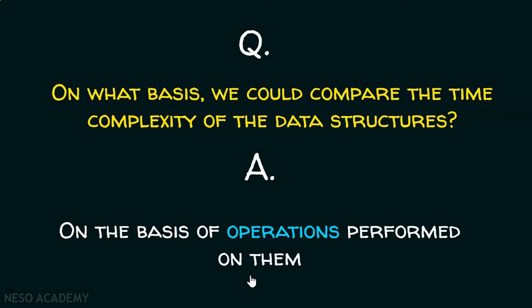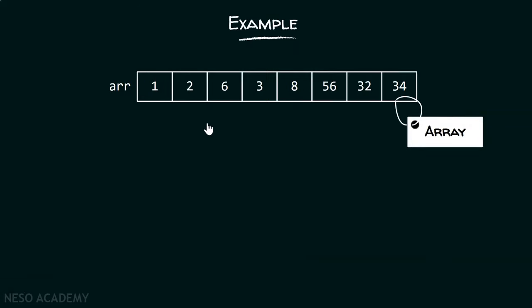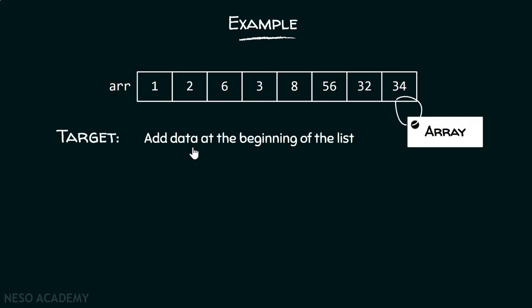Let me give you an example so the whole concept will be clear. Let's take an example of an array. Let's say this array is capable of storing 100 elements, and right now we have 8 elements in it. Our target is to add data at the beginning of the list — this is the operation we want to perform on this array. I want to know how much time it will take.